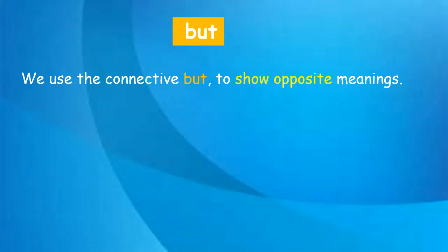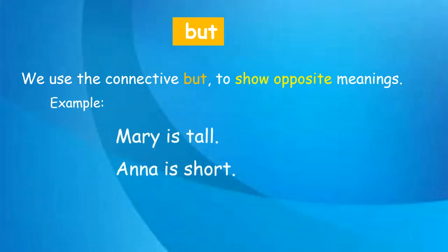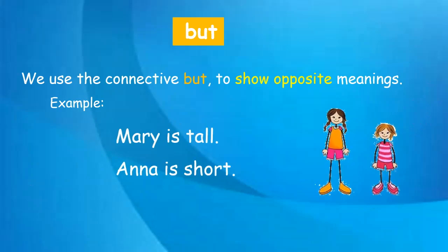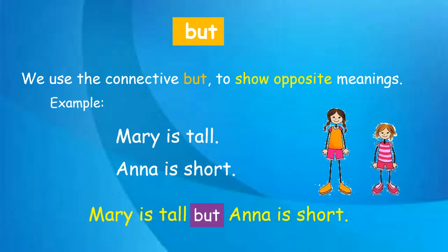Now, the connective 'but'. We use 'but' to show opposite meanings. Example: 'Mary is tall.' 'Anna is short.' Tall and short have opposite meanings, so we can write: 'Mary is tall but Anna is short.' We write the first sentence as it is, do not put the full stop, then write 'but' and continue with the second sentence.